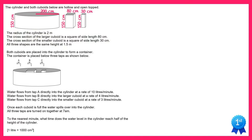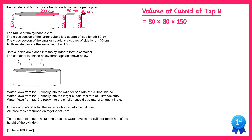Next we're going to work out the volume of the cuboid at tap B. This is the one that's 80 by 80 by 150, which gives you 960,000 centimetres cubed. In the question, the water that flows from this tap into the cuboid goes at a rate of 4 litres per minute.